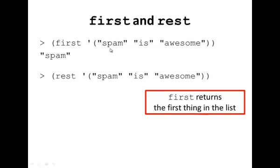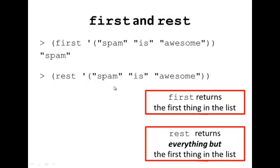Rest will return everything but the first element. So here, everything but spam. Rest returns everything but the first thing in the list. So here it returns the list is awesome.